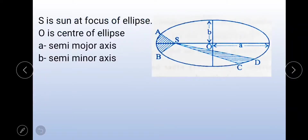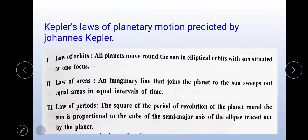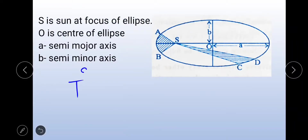If you consider the time period of revolution T — the time taken by the body to complete one revolution — the square of the time period is proportional to the cube of the semi-major axis. Hence, T squared is proportional to A cubed. The semi-major axis is denoted by A.